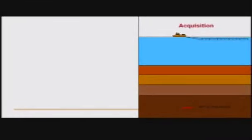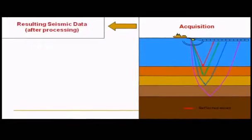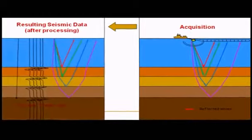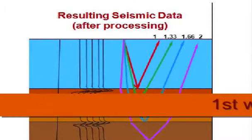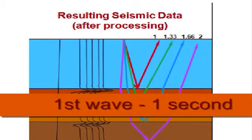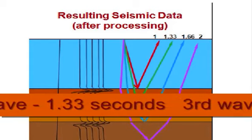Once we determine the velocities of the waves as I showed you earlier, we can determine the depths of the water. On our chart, we see that the first wave's travel time was 1 second. The second wave's travel time was 1.33 seconds.